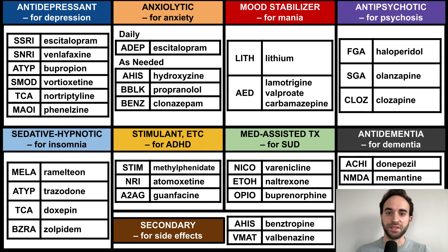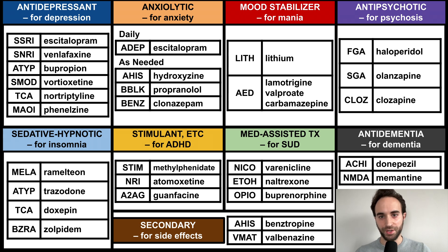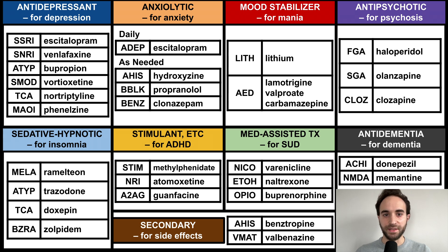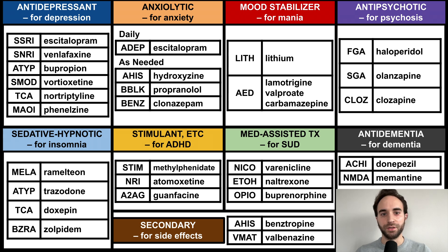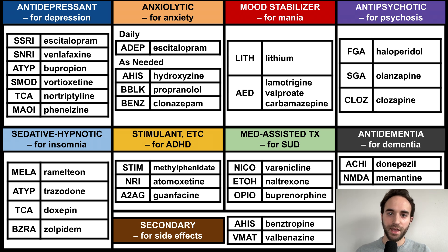Secondaries include any medications used to treat the side effects of a primary psychiatric medication. These include antihistamines and VMAT inhibitors for the extrapyramidal side effects of antipsychotics, as well as metformin for antipsychotic-induced weight gain, levothyroxine for lithium-induced thyroid toxicity, and levocarnitine for valproate-induced hyperammonemia, among others.